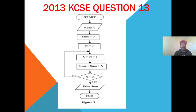This is Question 16. The flowchart shows: Start, then Read X, then we have Sum equals zero and N equals zero. After initializing Sum to zero and N to zero, we are told that N equals the value of N plus one. So for the first loop, N will equal one because zero plus one is one. Then Sum equals Sum plus N — so Sum is zero and N is one, therefore Sum becomes one.